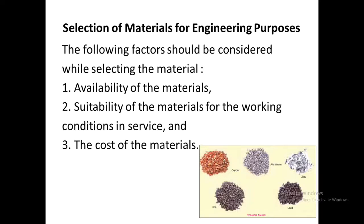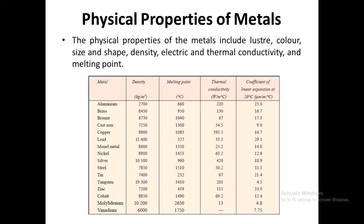Material selection for manufacturing different components is based on the availability of the material, the suitability of the material for the working conditions during operation, and the cost of the material. The physical properties of metals are very important in selection and include luster, color, size, shape, density, electrical conductivity, thermal conductivity, and melting point. Values for density, melting point, thermal conductivity, and coefficient of thermal expansion for different metals are used as references.